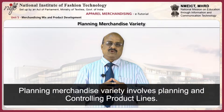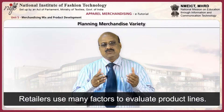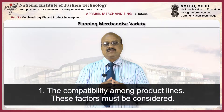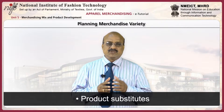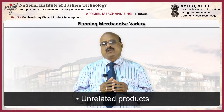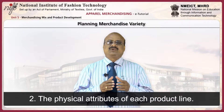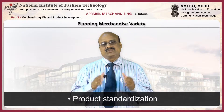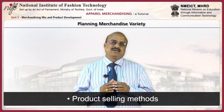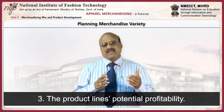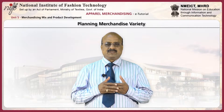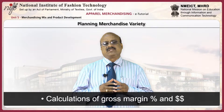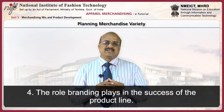Planning merchandise variety involves planning and controlling product lines. Retailers use many factors to evaluate product lines, including the compatibility among product lines. Factors to consider are product substitutes, product complements, and unrelated products. Also, the physical attributes of each product line: product bulk, product standardization, product service levels, and product selling methods. Additionally, the product line's potential profitability, including direct and indirect contribution to profitability and calculations of gross margin percentage and dollars. The role branding plays in the success of a product line must also be considered.